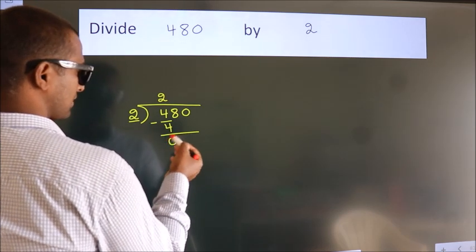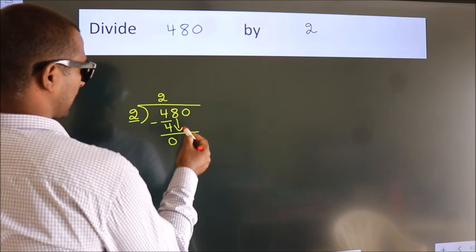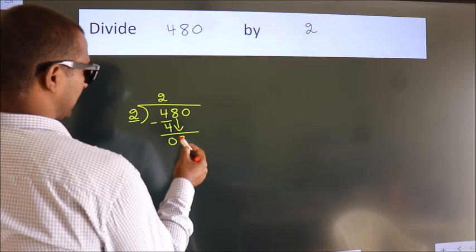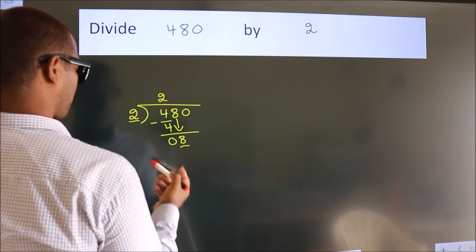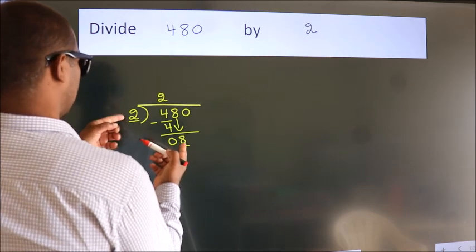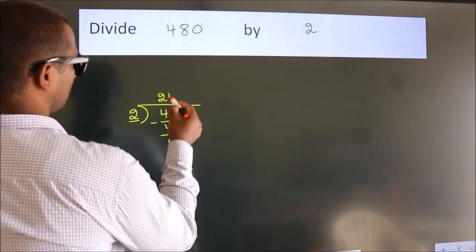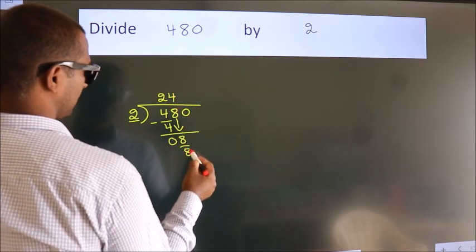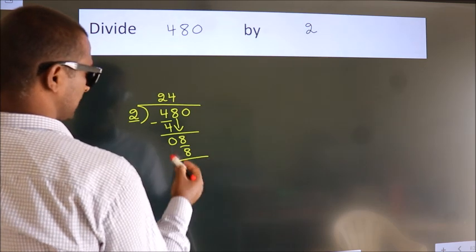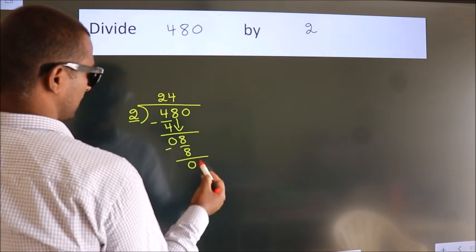After this, bring down the beside number. 8 down. When do we get 8 in 2 table? 2 4's, 8. Now, we subtract. We get 0.